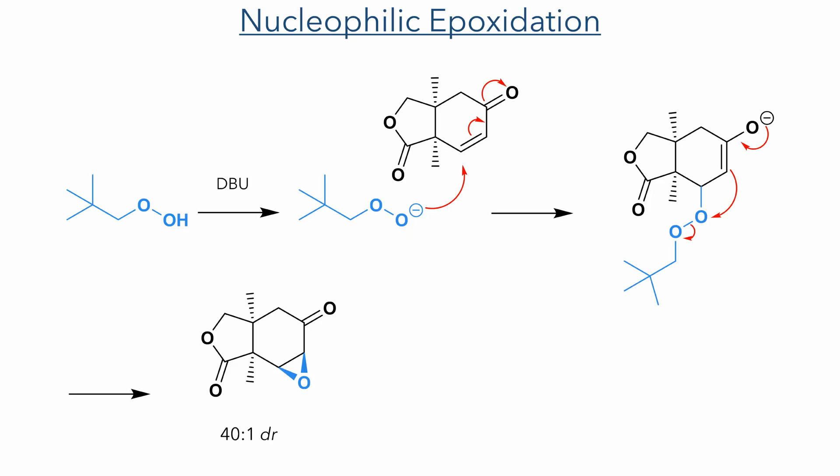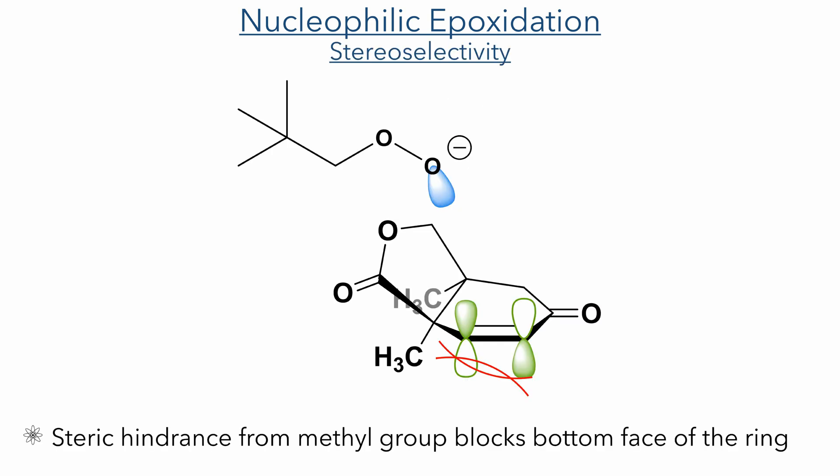Now let's look at the forward reactions. The sequence started with a nucleophilic epoxidation of an enone using tert-butyl hydroperoxide and DBU. The peroxy anion adds to the enone in a conjugate fashion, ultimately forming an epoxide with the expulsion of tert-butanol as a byproduct, giving the target epoxide in a 40:1 diastereomeric ratio. The selectivity comes from the steric hindrance of the mesial group, which blocks the bottom face of the ring, forcing the nucleophile to approach from the other face.